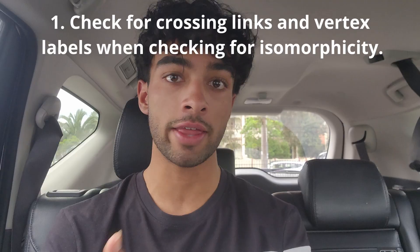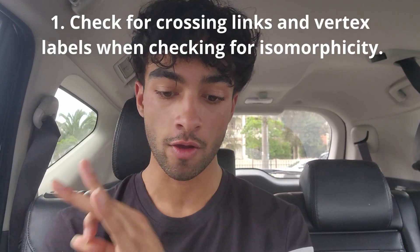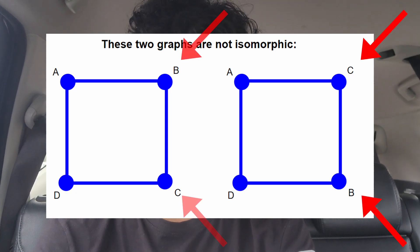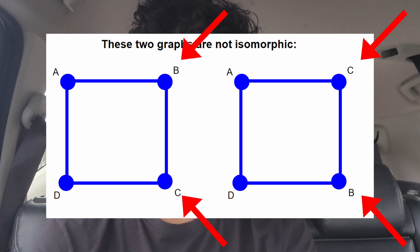When deciding whether graphs are isomorphic or not, you have to check whether the edges are crossing and the labels. You have to check these two things very carefully. For example, the graphs may look completely identical except the labels are switched around. In that case, it would be non-isomorphic.